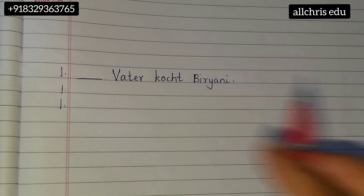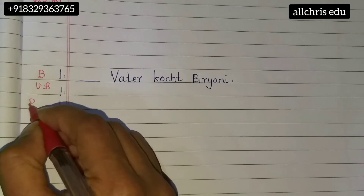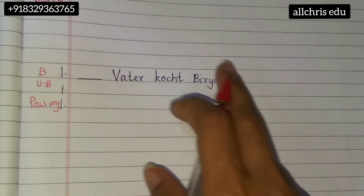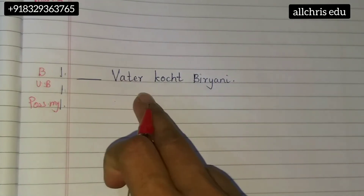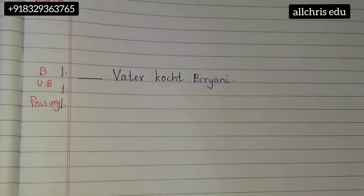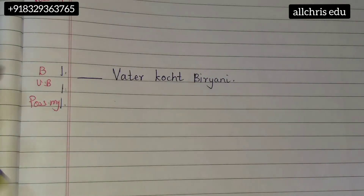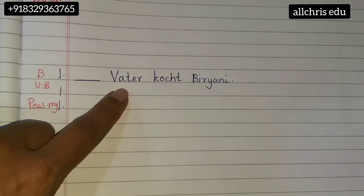In the first, we are going to put the bestimmt article. Second, unbestimmt. And third, possessive. But our main focus now should be: in this sentence, why is 'father' nominative? Because previously we studied that nominative means describing something — but here we are not describing father. Yet father is nominative, because father is a doer in this sentence. He is doing some action of cooking.